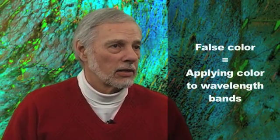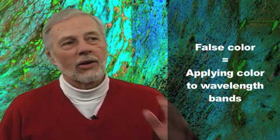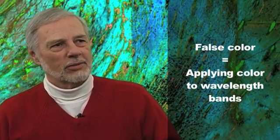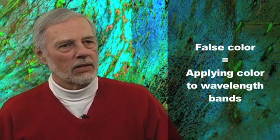You and I can only see things in the visible — blue, green, and red — so you can take any three of those bands and display them back in any combination of red, blue, and green that you want. We call that false color.